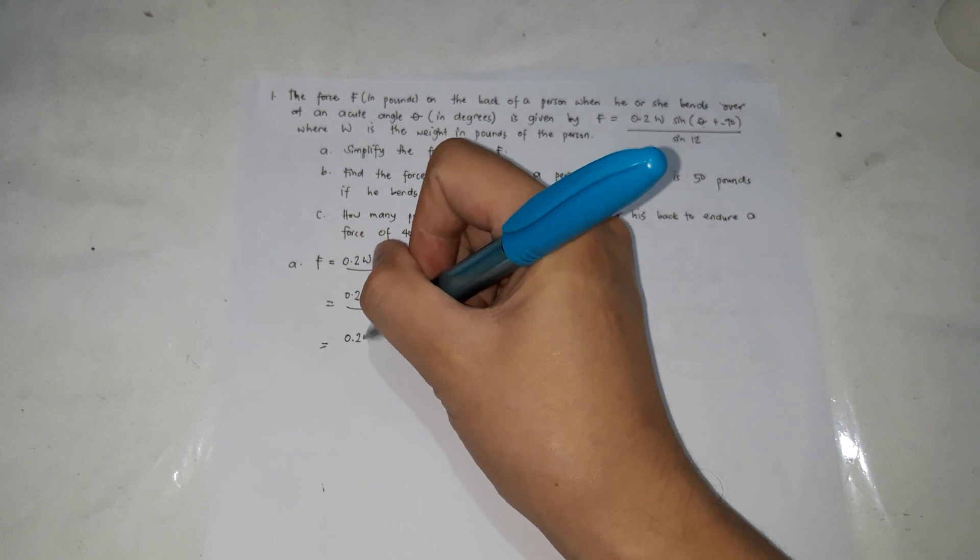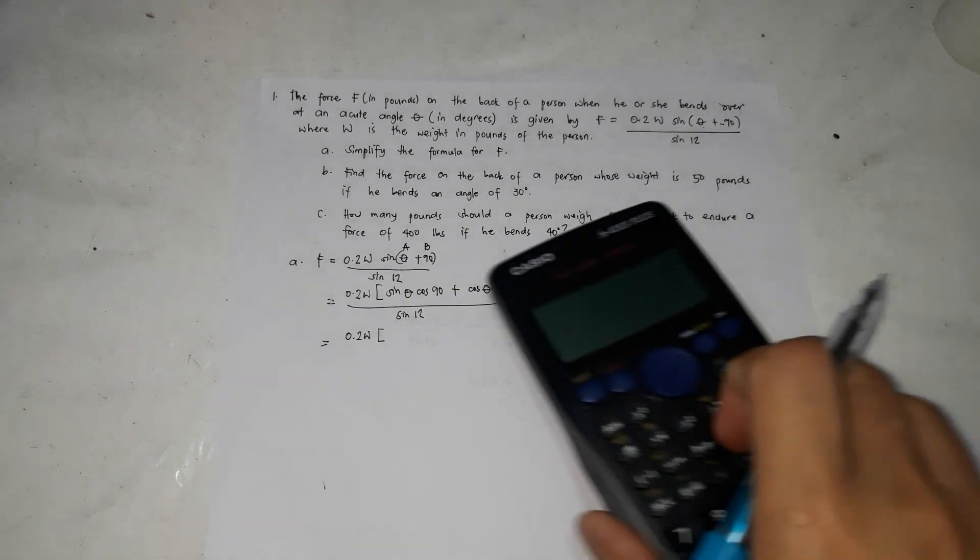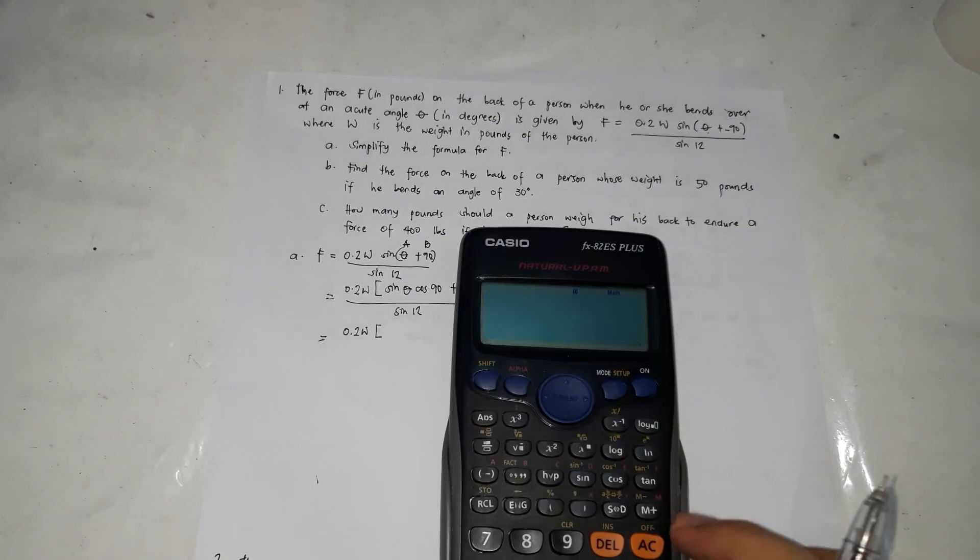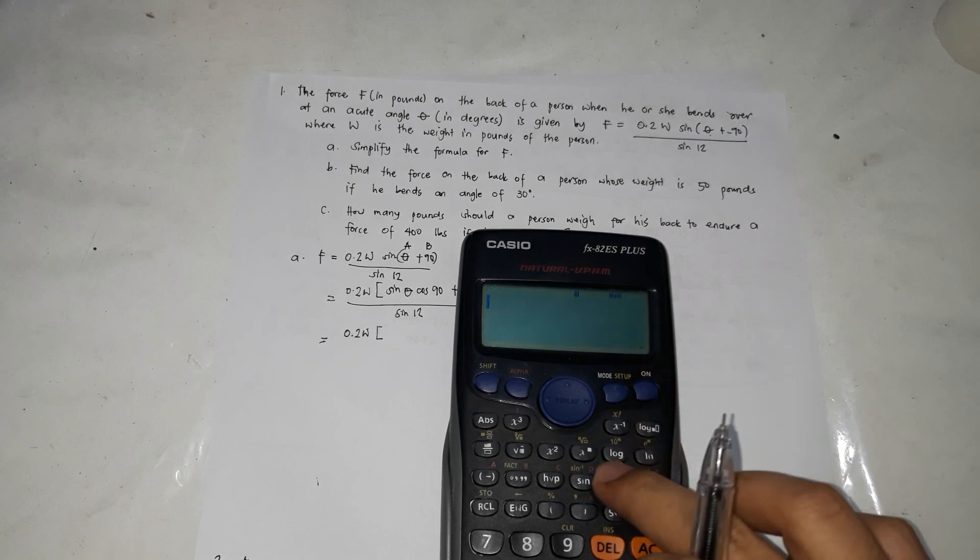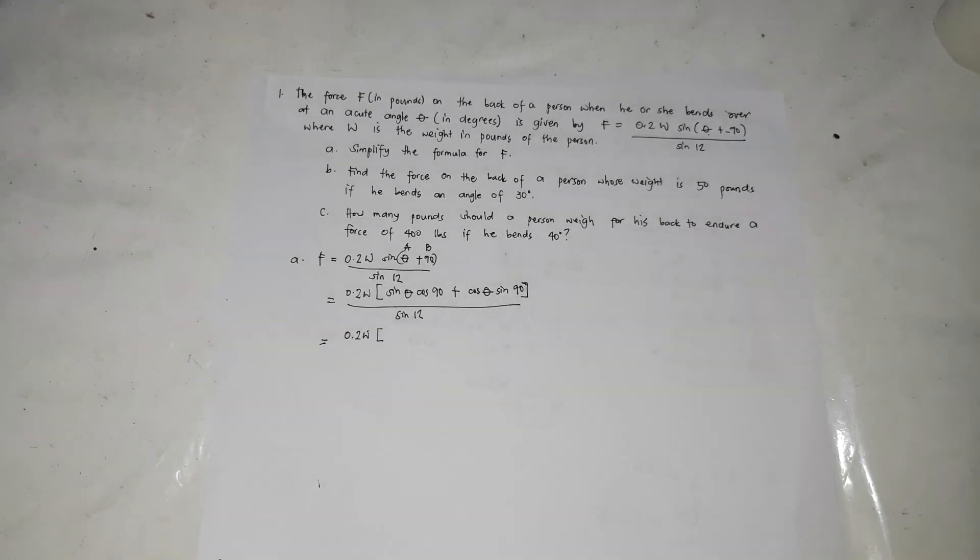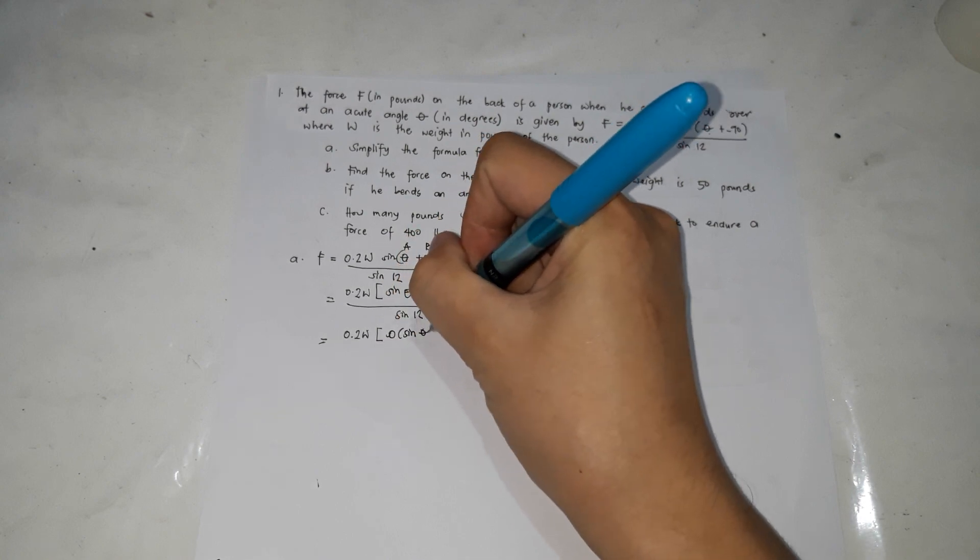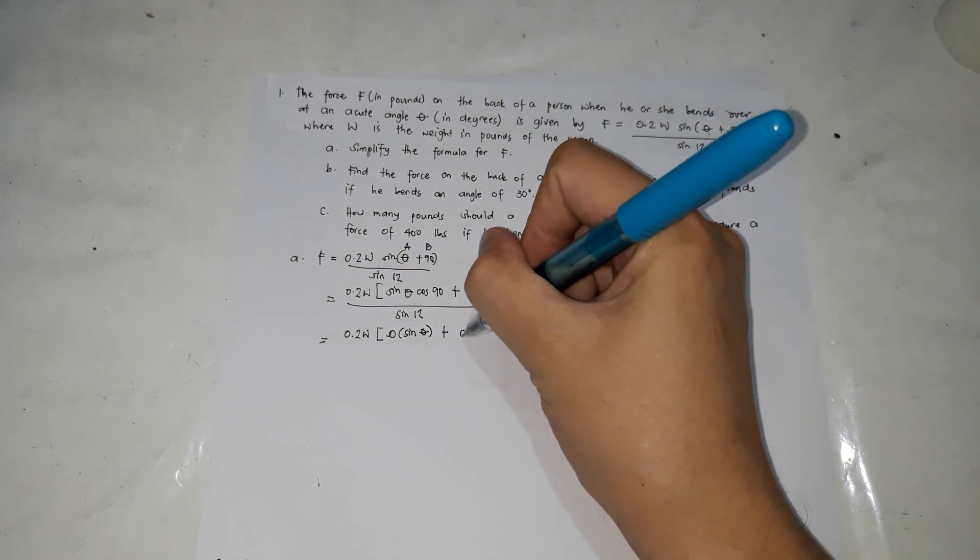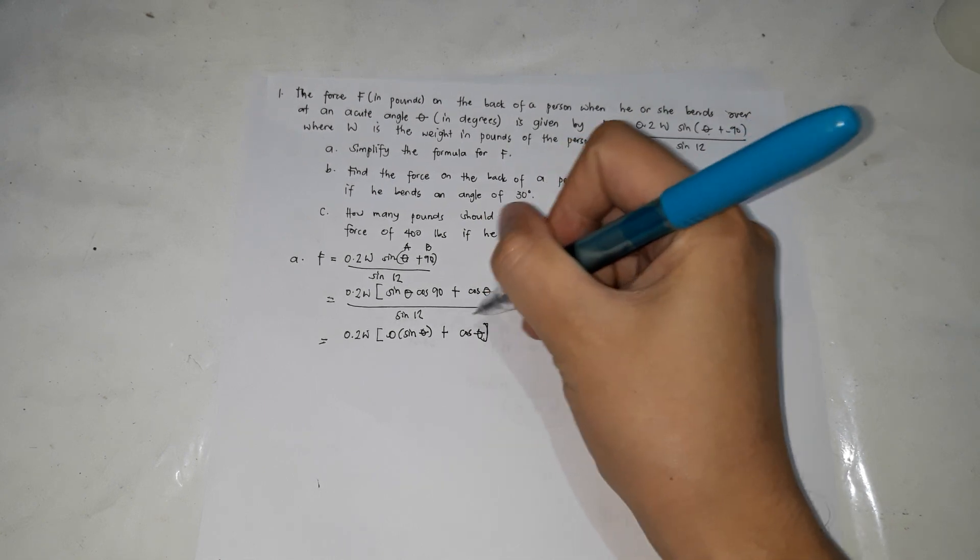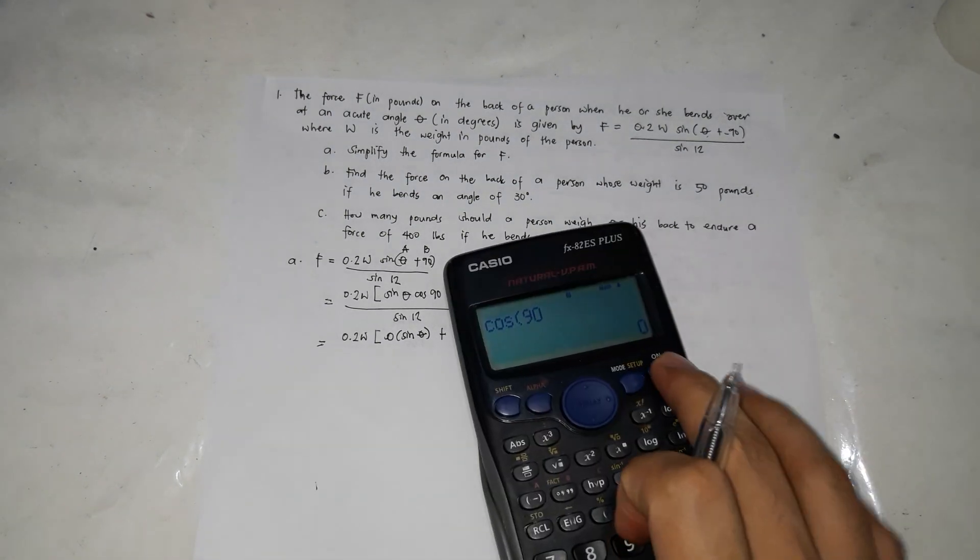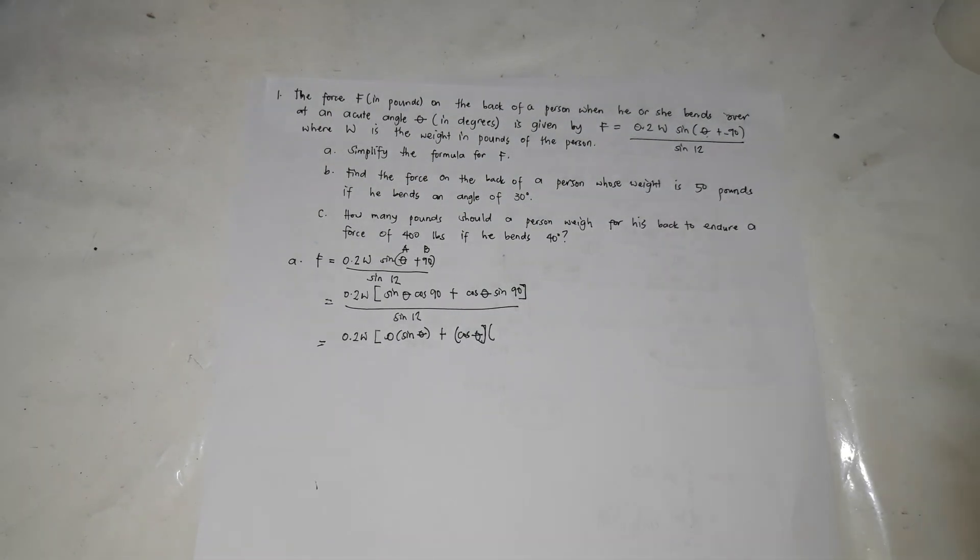This equals 0.2W times sine theta cosine 90. Cosine 90 is 0, so this becomes 0 times sine theta, plus cosine theta times sine 90, which is equal to 1. So that's 1.